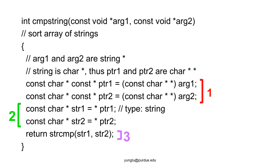We also need to add const for the pointers ptr1 and ptr2. The second step uses the right-hand side rule to get the strings. The third step uses the strcmp function to compare the two strings.